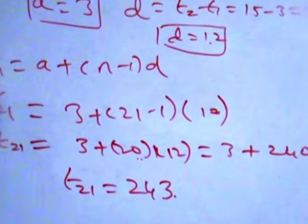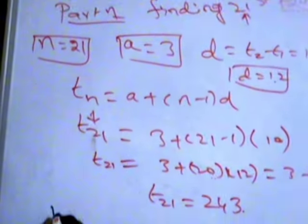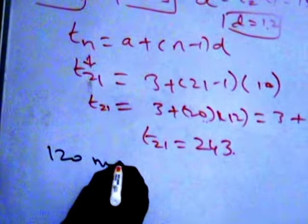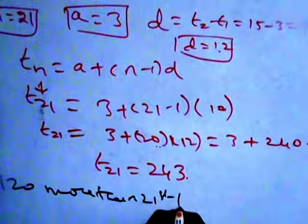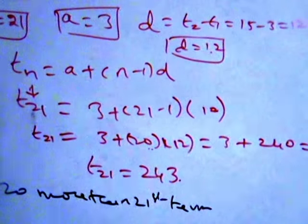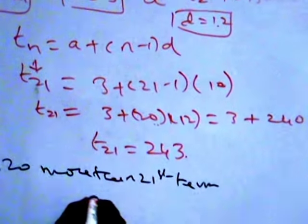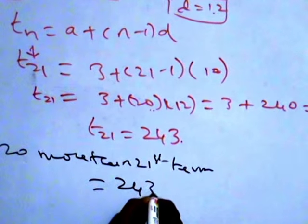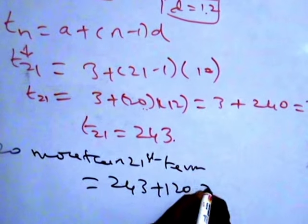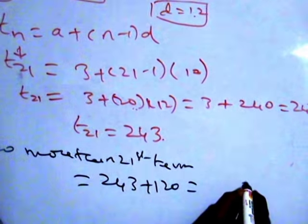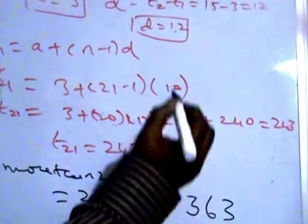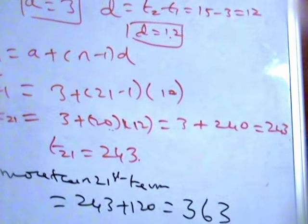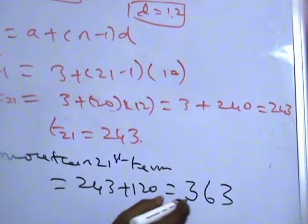Now we want 120 more than the 21st term. 120 more than the 21st term is nothing but 243 plus 120, which equals 363. Now Part 2 starts.